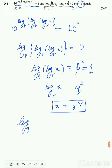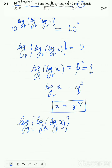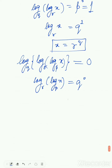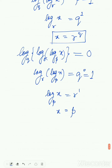Now for the second equation: log base q of log base r of log base p of x equals 0. Solving this: q equals 0, log x base p — this is 1 and this is 1, so r to the power of 1. Then x is equal to p to the power of r.